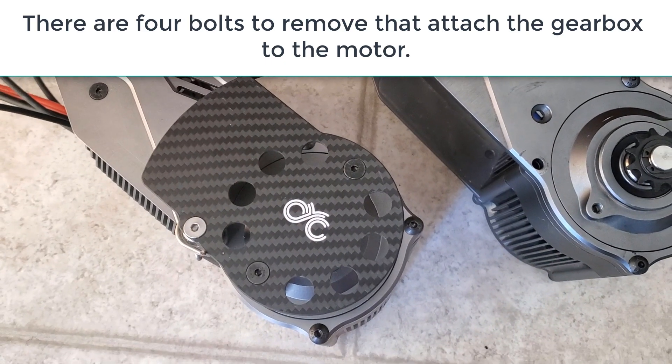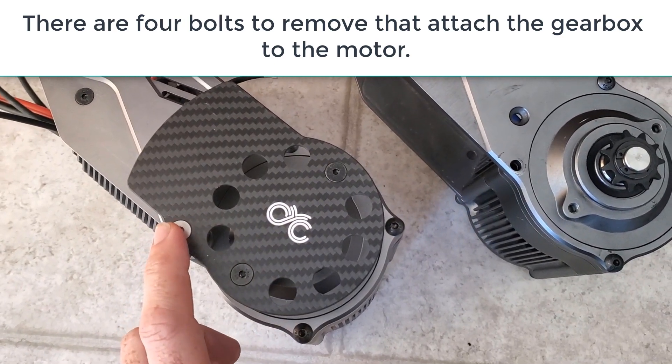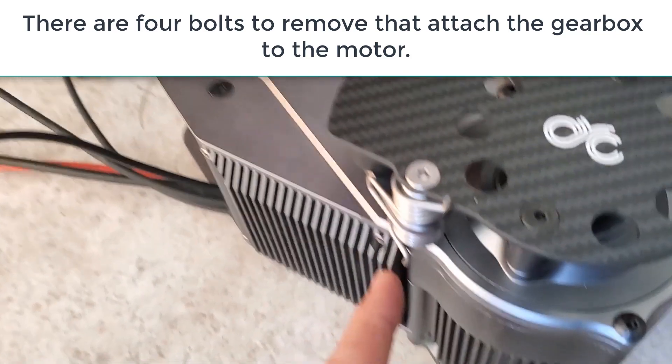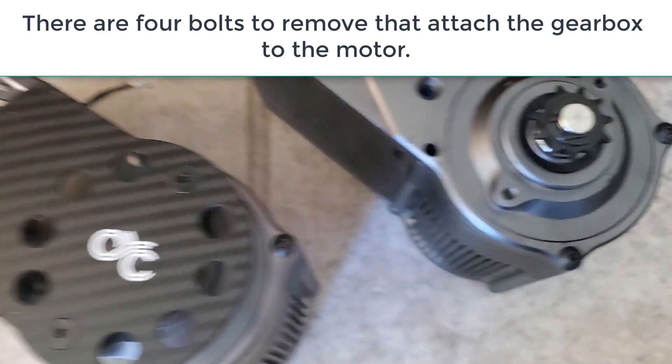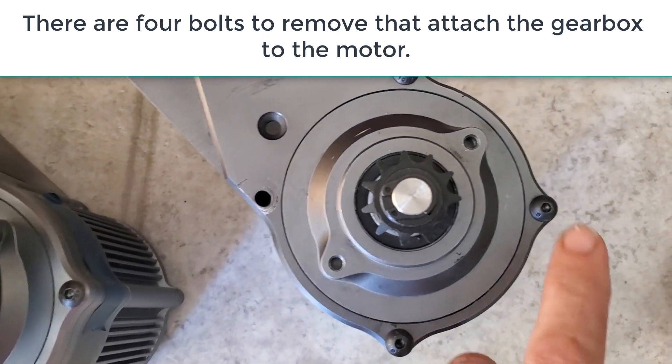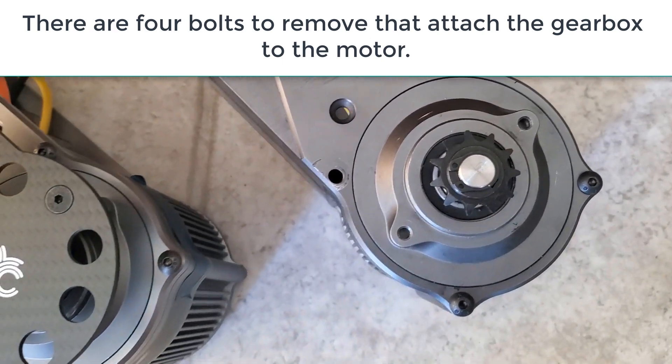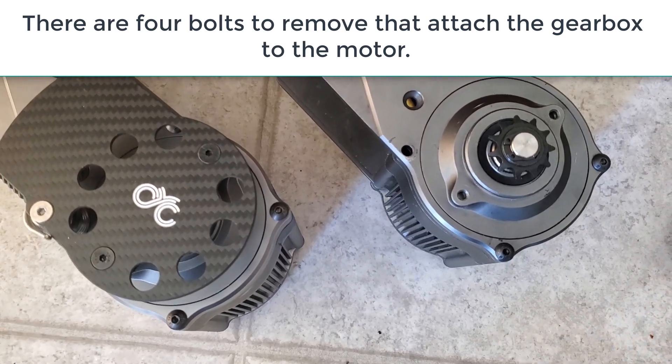So to remove the gearbox from the X1, there are essentially four bolts. First one is here, and then once you've taken off the cover and removed the spring chain tensioner, then you're left with three bolts to remove: one here, one here, and one here. And when you get them apart, you'll be able to see the inside of the gearbox like in the next picture.